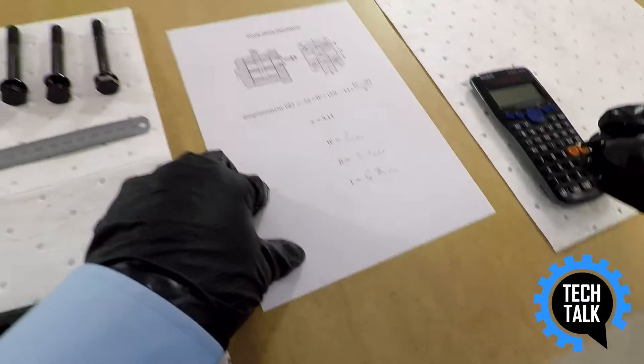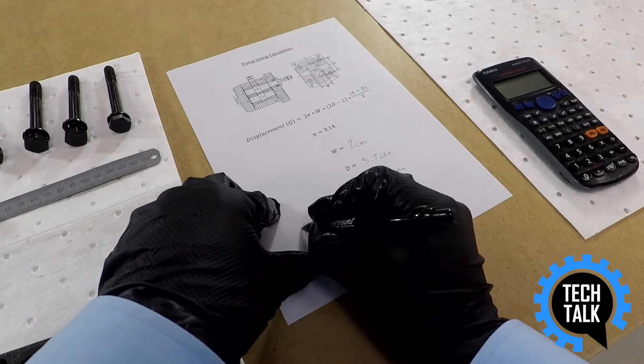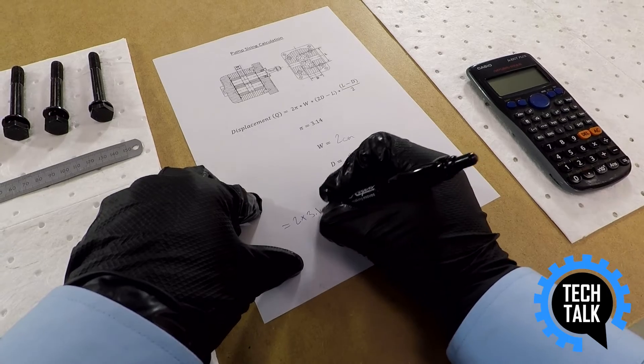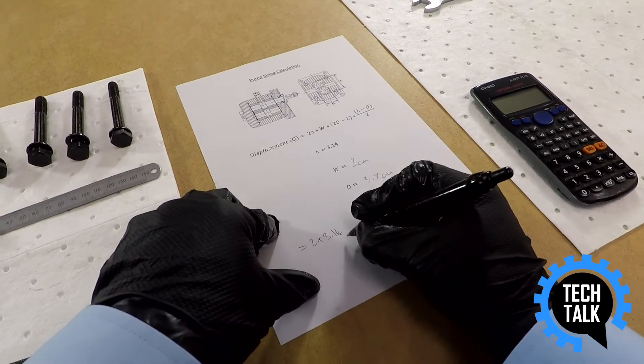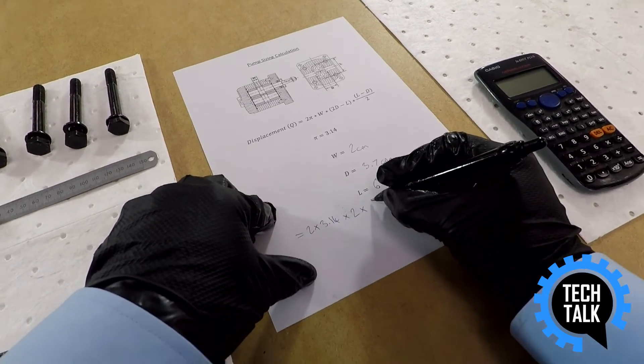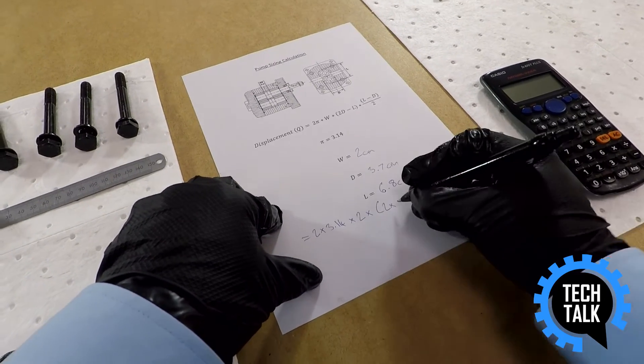Now we can plug these numbers into the equation. So for pi we can use 3.14, so 2 times 3.14 times that by W which is 2, times by 2 times D which is 3.7.